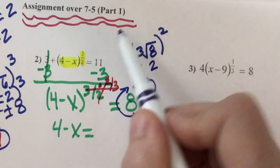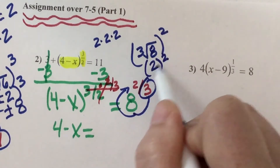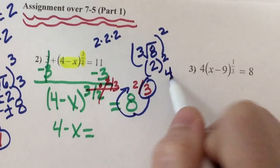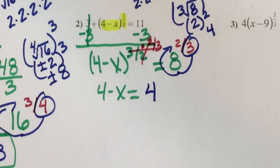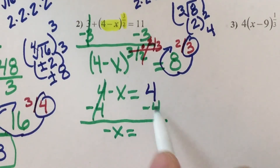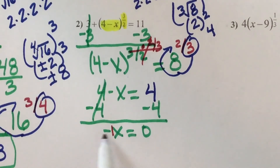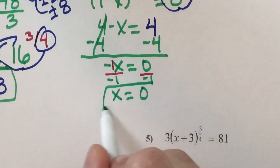The cubed root of 8 is 2, because 2 times 2 times 2 makes 8. Then I need to raise that to the 2nd power — 2 squared, 2 times 2, is 4. So this is a 4. Now let's get x by itself. This is a positive 4, so I'm going to subtract it. The negative x comes down, and 4 minus 4 is 0. Remember, this is like a negative 1 in front of the x, so to undo multiplication I divide both sides by negative 1. That just leaves x, and 0 divided by anything is 0. So 0 is my answer.